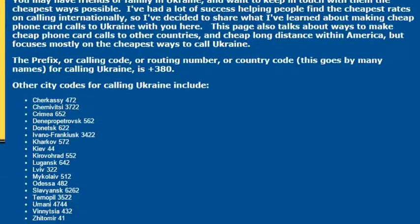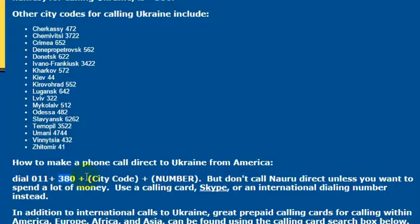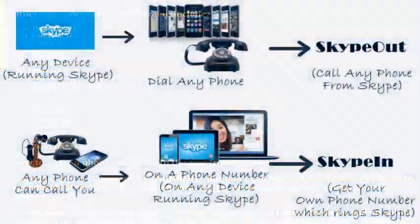In any case, if you are planning on traveling to Ukraine, as I would like to at some point, the country code for Ukraine is 380. So if you want to call Ukraine, you would dial the international dialing code from the United States, which is 011, then the country code 380, and then the phone number you want to call.